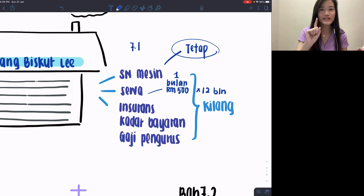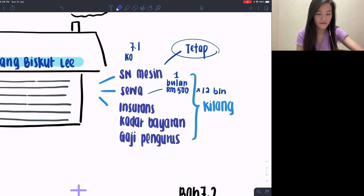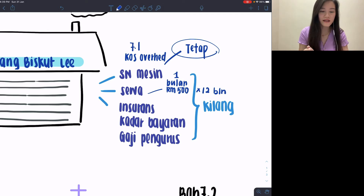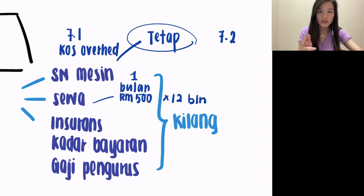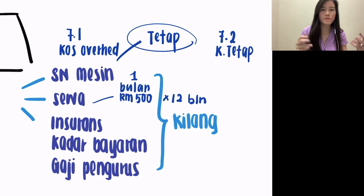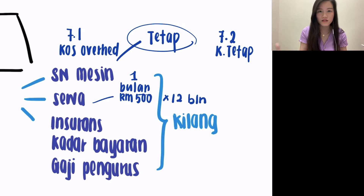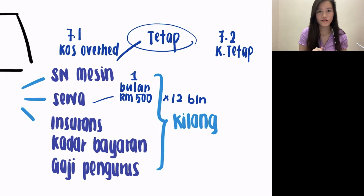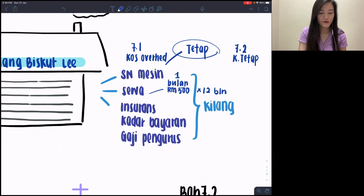In Bab 7.1, this group is called cost overhead. But the same group also applies to Bab 7.2 TPM chapter, where they will be used as cost tetap. You can see why Bab 7.1 and 7.2 might connect together to form a full 25-mark or 20-mark question — because the items are related to each other, not separate. Cost berubah changes according to units, while cost tetap doesn't change no matter how many units you produce.